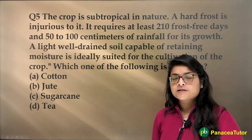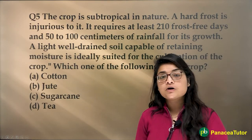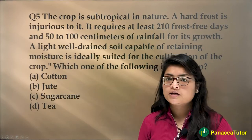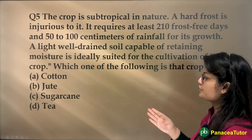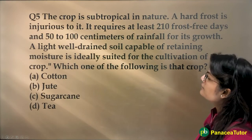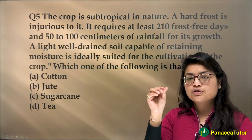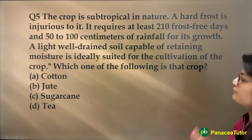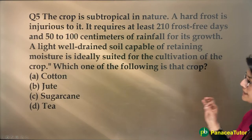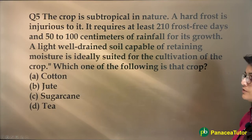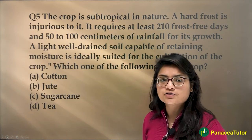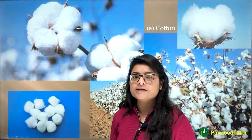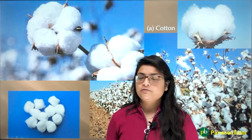Moving to the next question — you have to identify the crop. Every year UPSC throws a question from the crops section, so cover your agriculture syllabus carefully. The crop is subtropical in nature, a hard frost is injurious to it, it requires at least 210 frost-free days and 50 to 100 centimeters of rainfall, and a light well-drained soil capable of retaining moisture is ideally suited for its cultivation. The answer is cotton. Revise your NCERTs if you could not derive the correct conclusion.